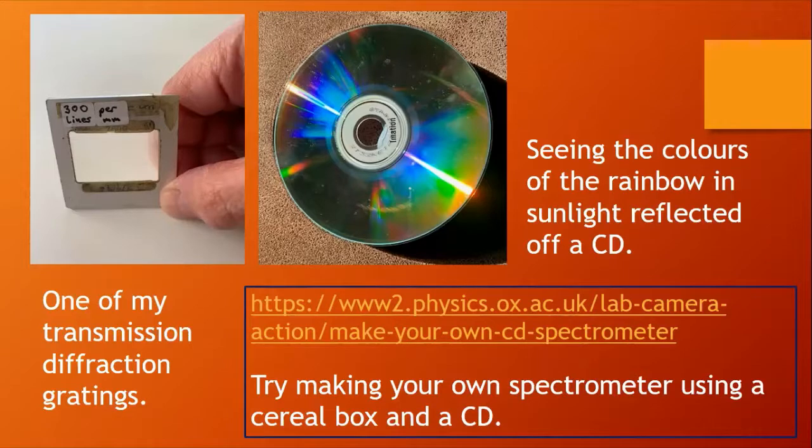Along any radius on a CD we have tracks that are a fixed distance apart like our transmission grating, and so we see the colors of the rainbow. You can make your own spectrometer using a CD and a cereal box or a paper tube. Give it a go.